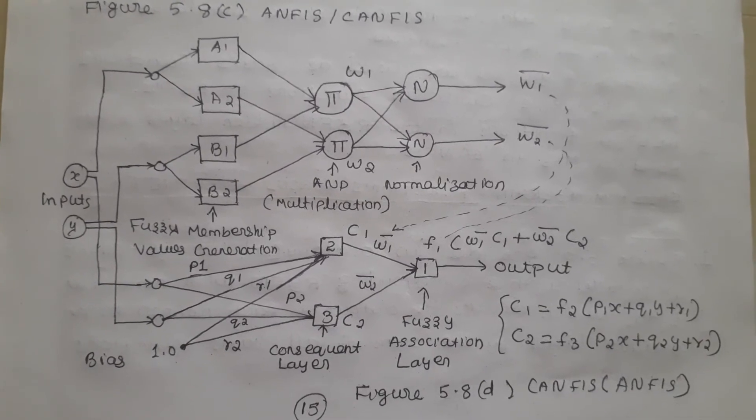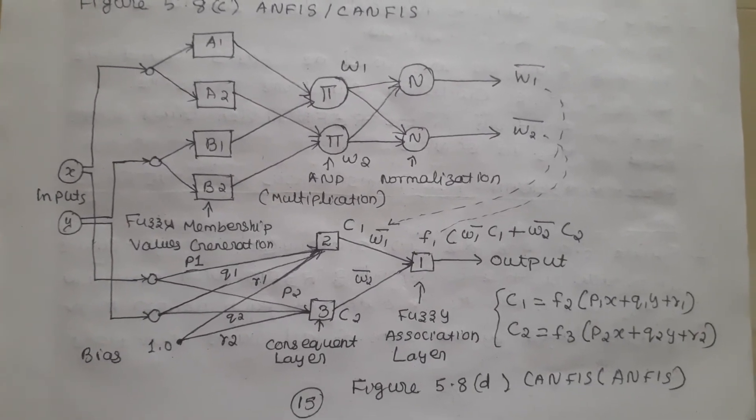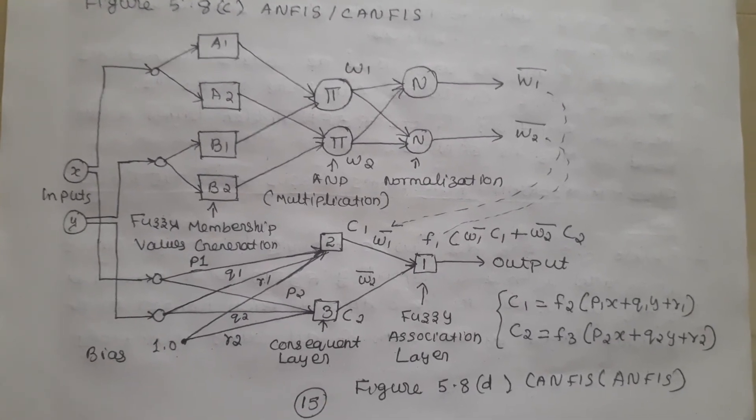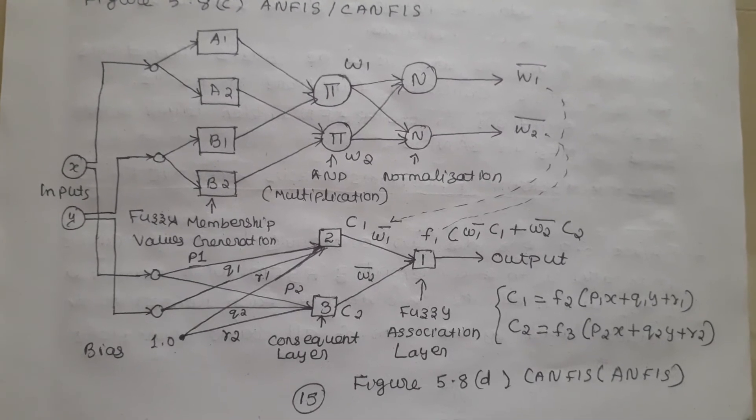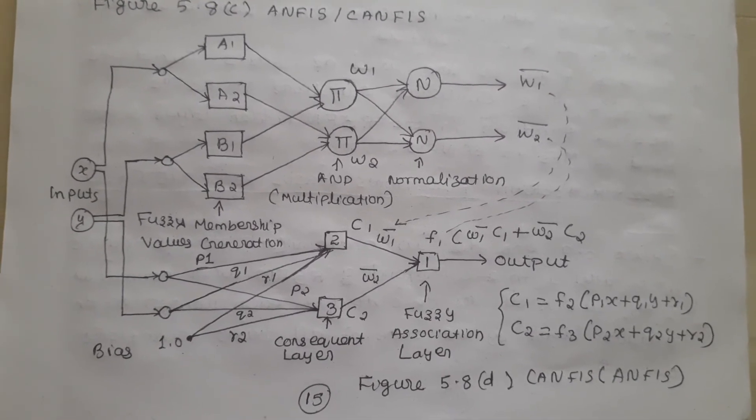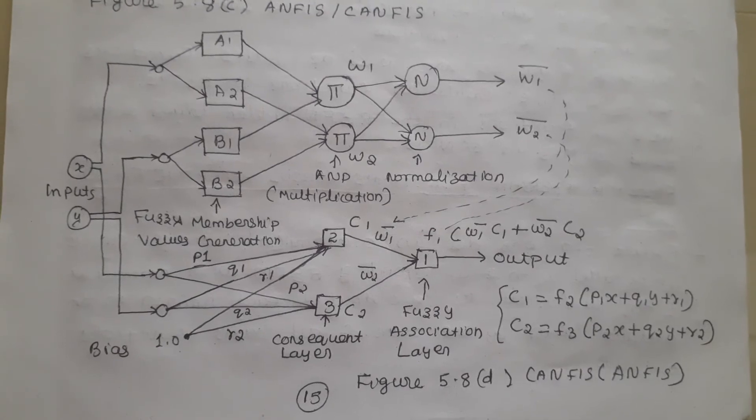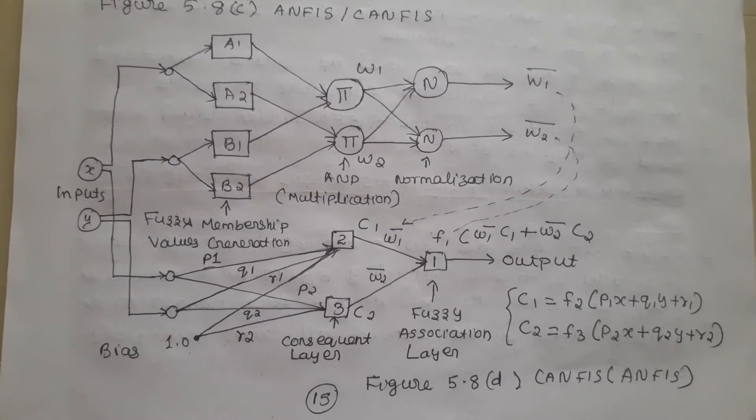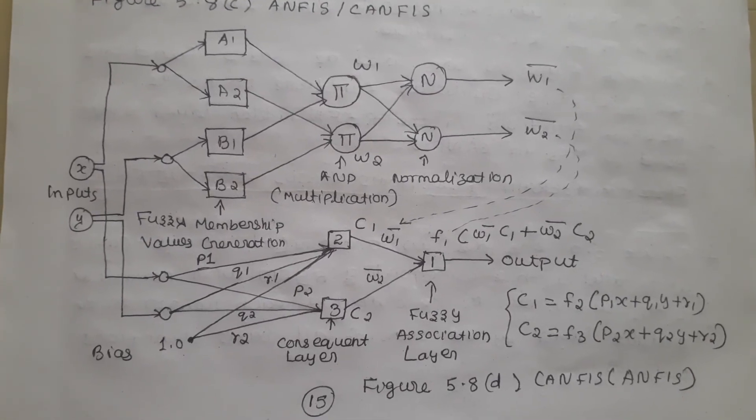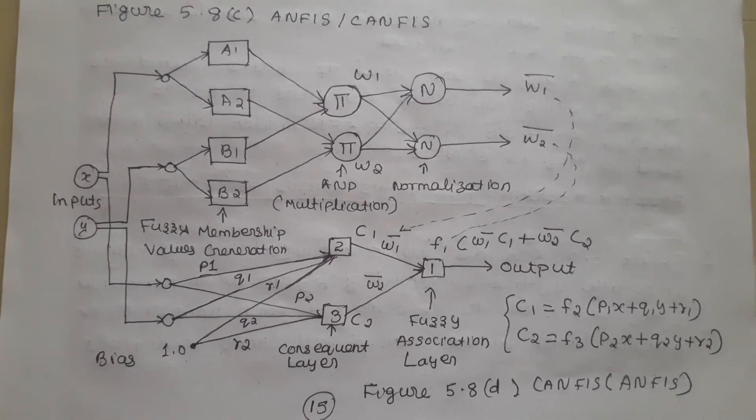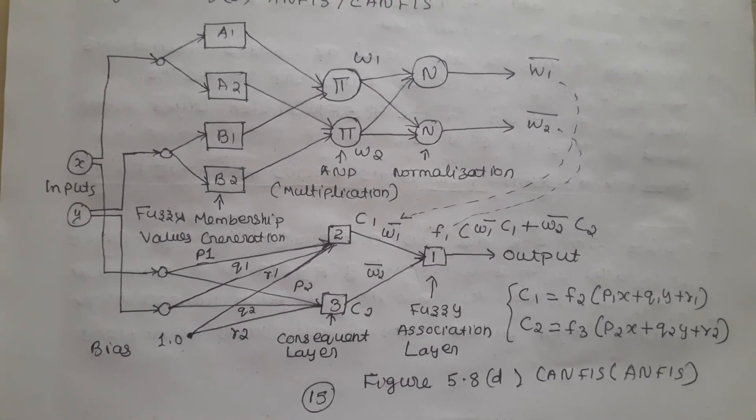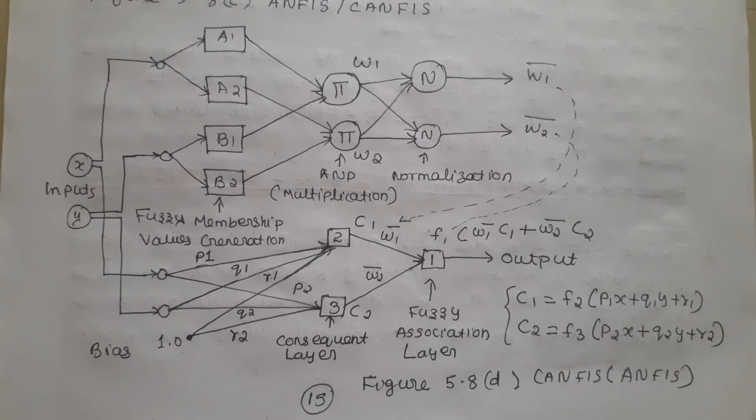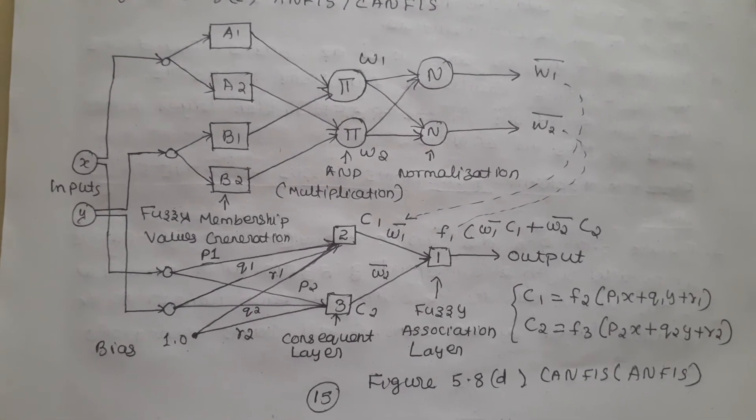CANFIS is locally tuned like the RBFN. The backpropagation multi-layer perceptron with sigmoidal neuron functions globally updates weight coefficients for every input pattern, attempting to find one specific set of weights common to all training patterns. The RBFN may need more data to achieve a certain accuracy than the multi-layer perceptron.